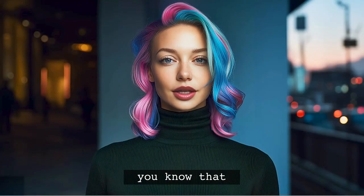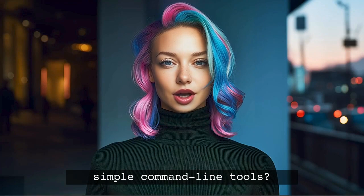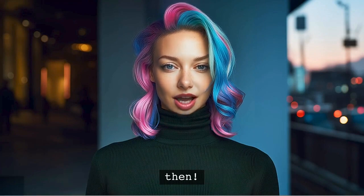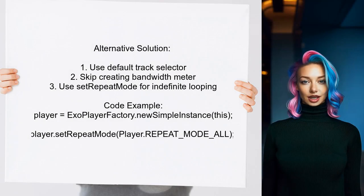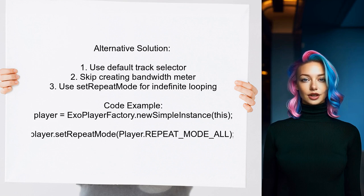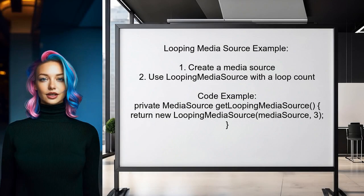Fun fact — did you know that the first video players were just simple command line tools? We've come a long way since then, but sometimes the simplest things trip us up. Now let's look at the answers provided by other users. An alternative approach suggests simplifying the ExoPlayer setup, using the default track selector without creating a bandwidth meter. For looping, instead of using a looping media source with a count, they advise using the set repeat mode method for indefinite looping. They also provide a code snippet for creating a looping media source with a specified loop count, useful if you want to loop a video a specific number of times.